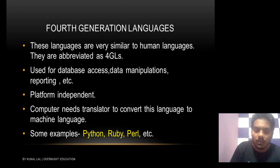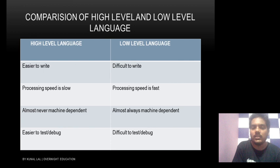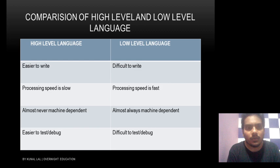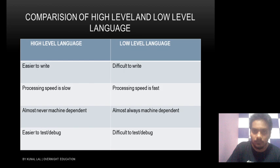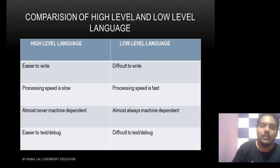Now let's compare high level language and low level language. The first point is easier to write. High level language is easier to write — writing in 0s and 1s is difficult, but high level language is similar to human language, which is why it is easy to write.